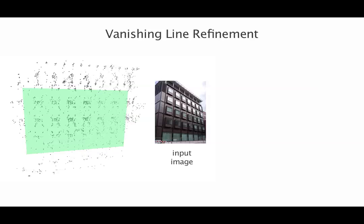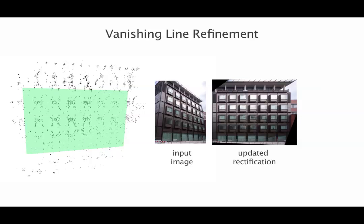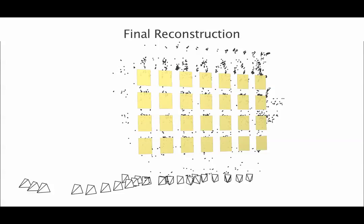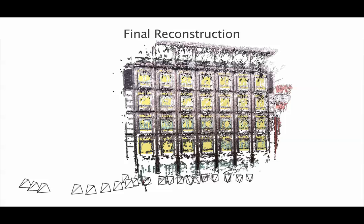Having established consistent image correspondences, we perform bundle adjustment using additional symmetry information. We iterate by refining the initial vanishing line estimates. In the end, we obtain the camera poses and the refined symmetry parameters of the inputs.